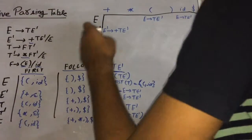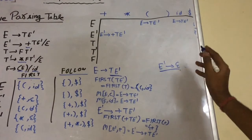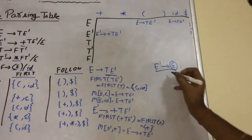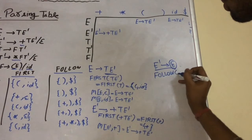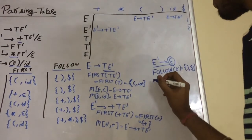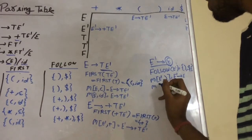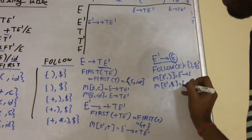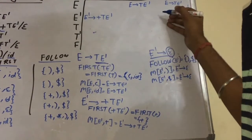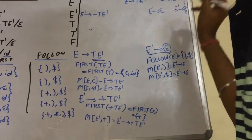Now take production E'→null. Since this production derives null, we have to find FOLLOW of the left-hand side symbol. FOLLOW(E') is closing parenthesis and dollar. So M[E', ')'] = E'→null and M[E', $] = E'→null. In the table: E' for closing parenthesis gives E'→null, and E' for dollar gives E'→null.